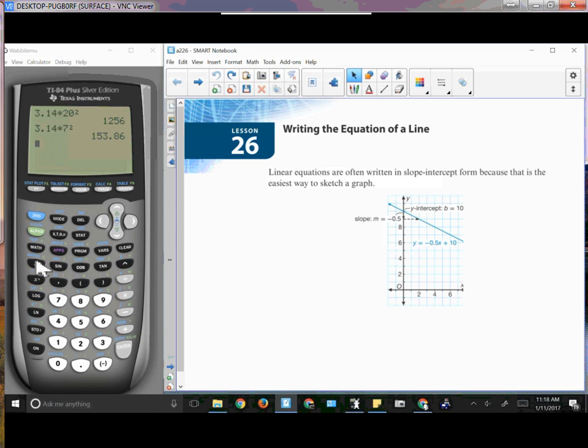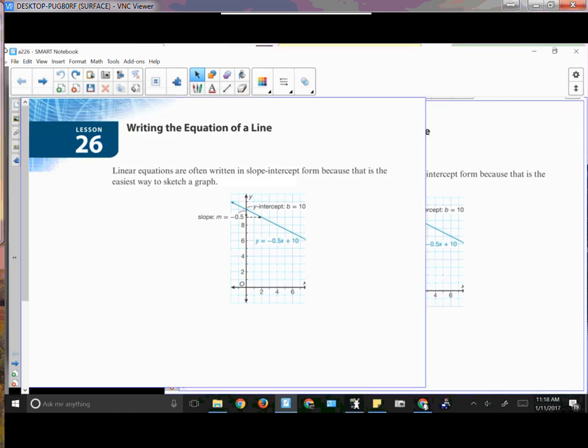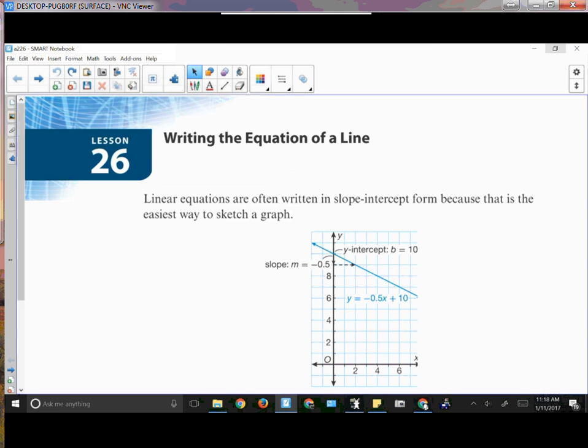Okay, writing the equation of a line. You've done this before when we've gone through and written something in slope-intercept form. Just as a review, where it goes through the y-axis is the intercept, and the slope is your rise over your run.